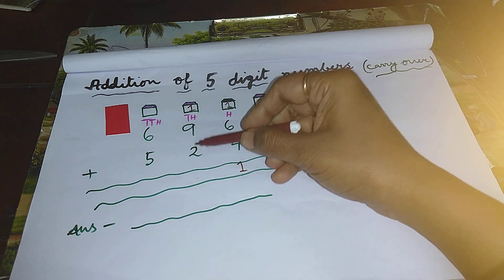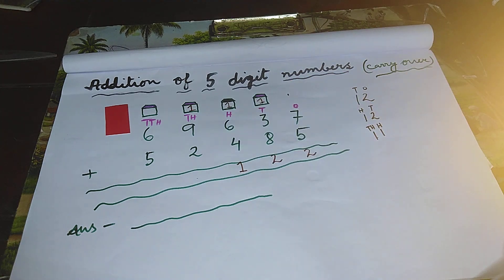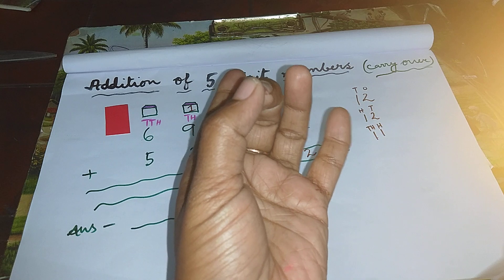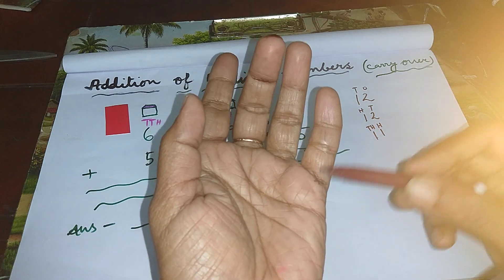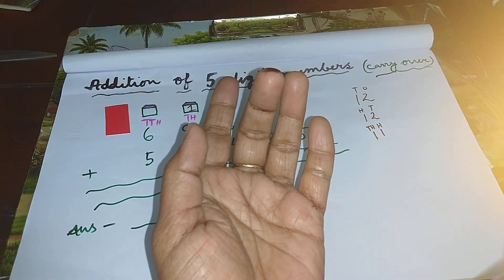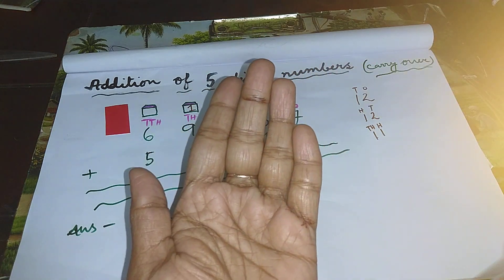The next digit is two, so count more two lines: one, two. Again, twelve comes. From here to here, total how many lines are there in all? Twelve lines.